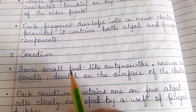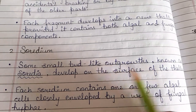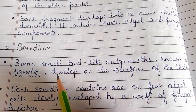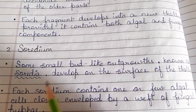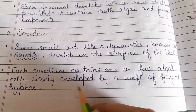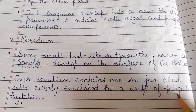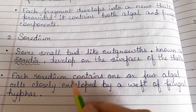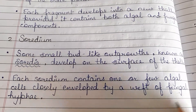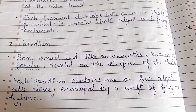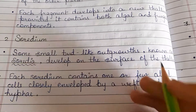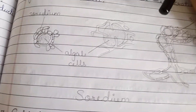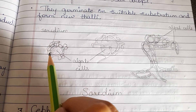Second is soredia. Some small bud-like outgrowths known as soredia (singular: soredium) develop on the surface of the thallus. Each soredium contains one or a few algal cells closely enveloped by a weft of fungal hyphae — that is, fungal hyphae are interwoven around the algal cells. This structure can be seen in the diagram.